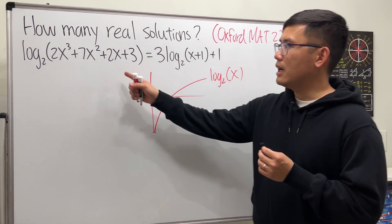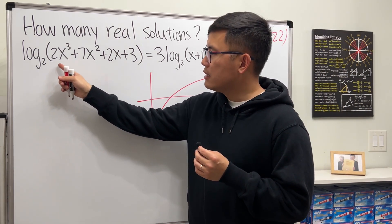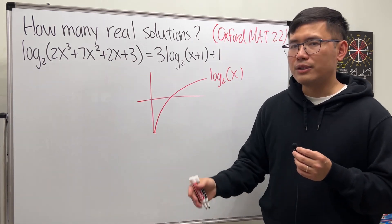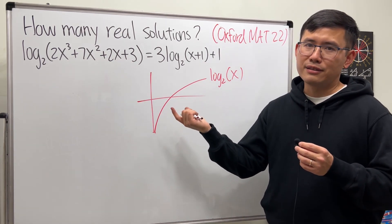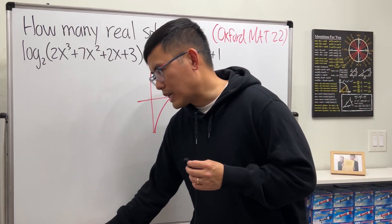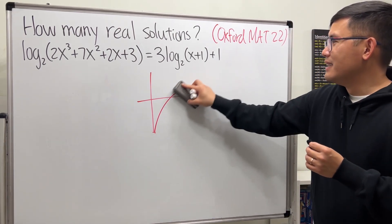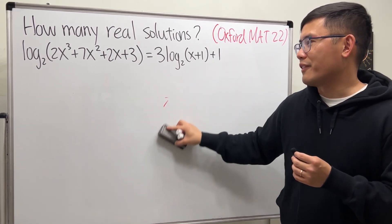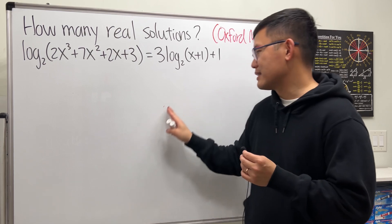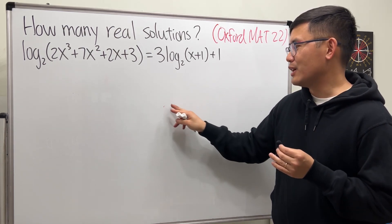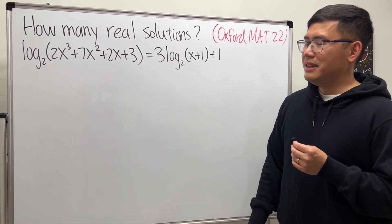But on the left hand side this is crazier because the input here is a cubic, so I don't know the ups and downs of that. Unless we do more calculus, I don't think it's achievable by looking at the graph easily. So let's just go ahead and try to solve it.